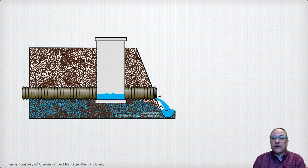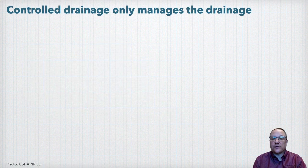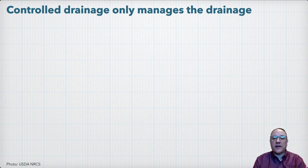An important concept to understand about controlled drainage is that it only controls the drainage by adjusting the outlet elevation. While that impacts the water table elevation and the height to which it can rise, the actual water table elevation will depend on the interaction with other components of the field water balance.